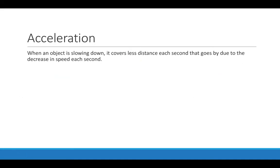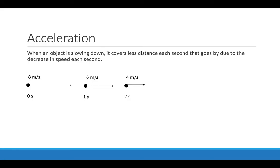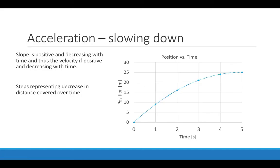When the object is slowing down, it covers less distance every second because the speed is decreasing. If an object starts at 8 meters per second at time zero, after 1 second it's only traveling 6, then 4 after 2 seconds, 2 after 3 seconds, and eventually comes to rest after 4 seconds. The distance covered in the first time interval is much greater than in the next, and so on, as we continue.